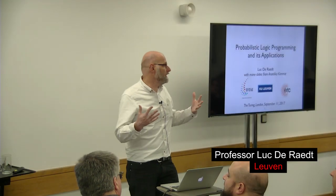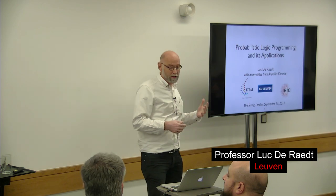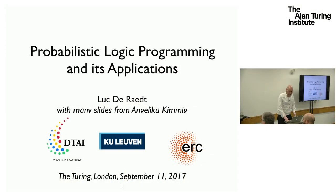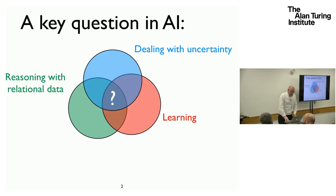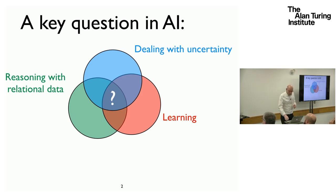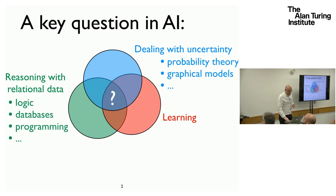I'm going to talk today about combinations of logic learning with probabilistic stuff. The slides are joint work with Angelica Kimmich, with whom I'm giving a lot of tutorials on this topic. Probabilistic logic learning is trying to give an answer to a key question in AI: reasoning about relations or logic, dealing with uncertainty, and going for learning.